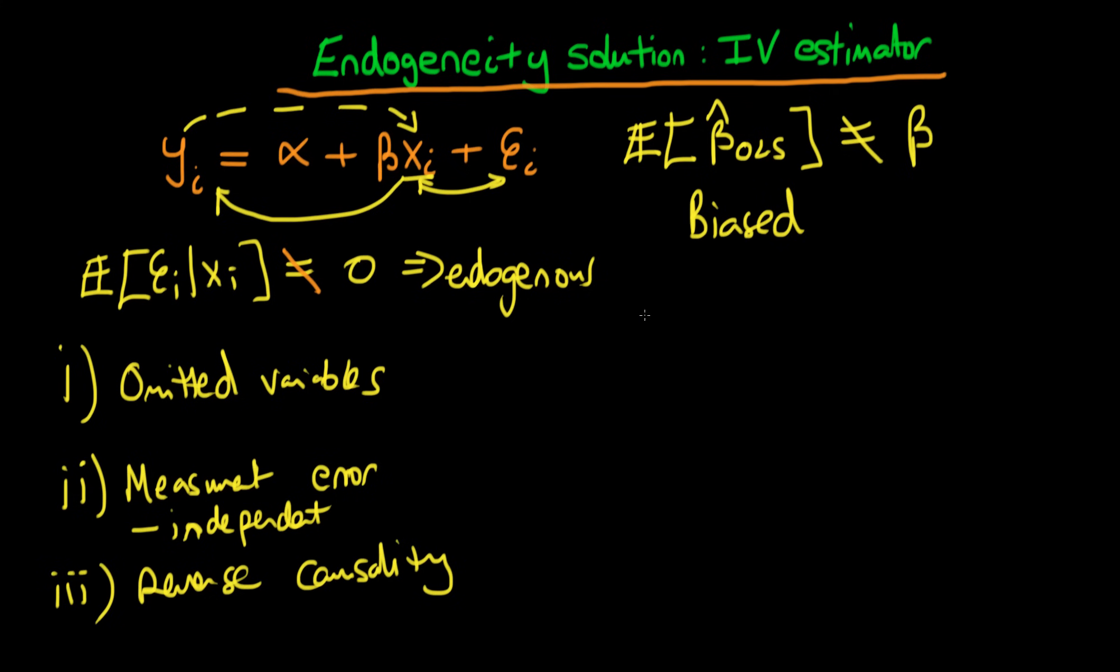And furthermore, it's not just biased. We know that as n tends to infinity—in other words, our sample size gets bigger and bigger—it happens to be the case that our OLS estimator does not tend to the true parameter beta. In other words, our estimator is not just biased but it is what we call inconsistent.